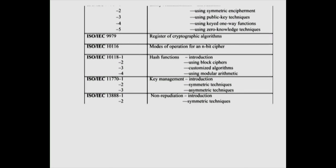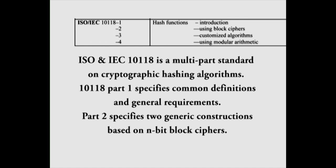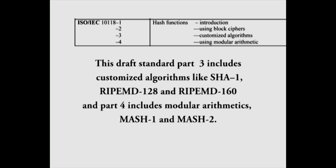ISO and IEC 10118 is a multi-part standard on cryptographic hashing algorithms. Part 1 specifies common definitions and general requirements. Part 2 specifies two generic constructions based on N-bit block ciphers. Part 3 includes customized algorithms like SHA-1, RIPEMD-128 and RIPEMD-160. And part 4 includes modular arithmetic, MASH-1 and MASH-2.